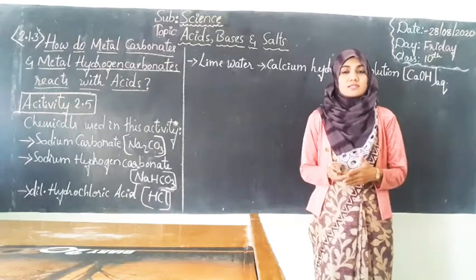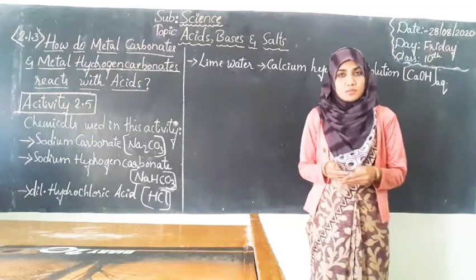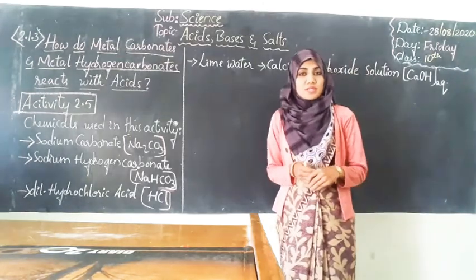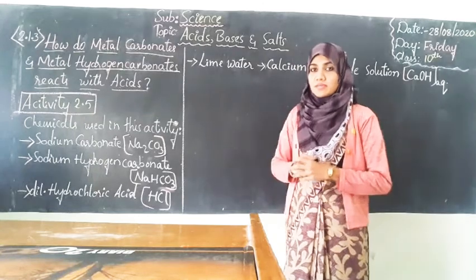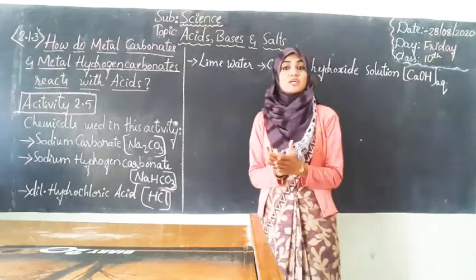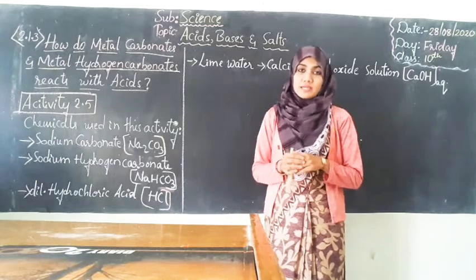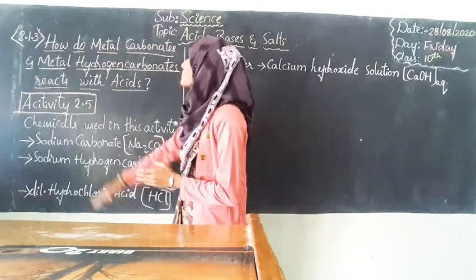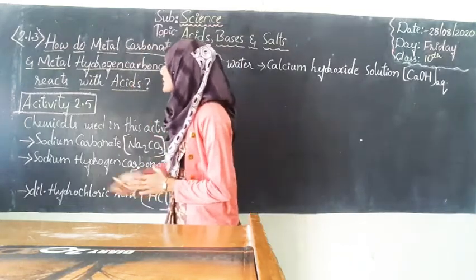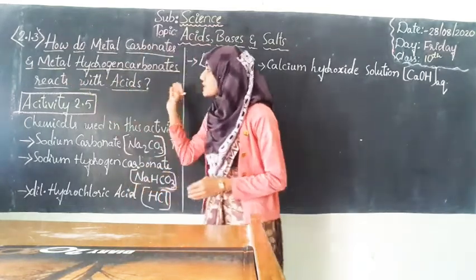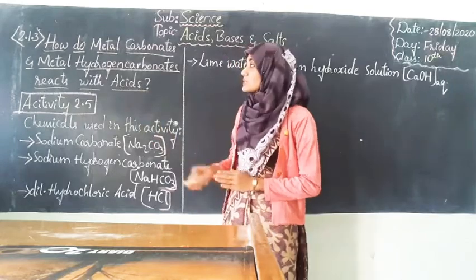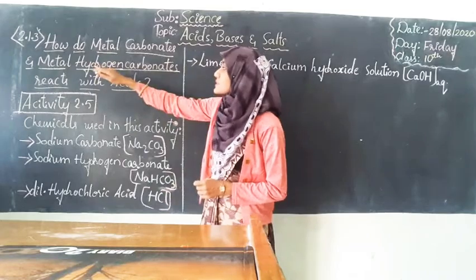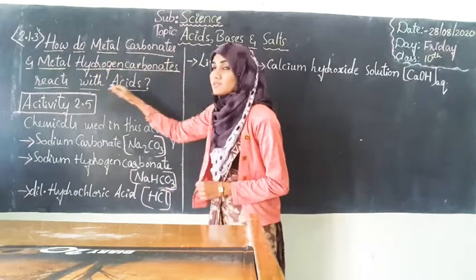Hello students. Last class we learned about the chemical properties of acids and bases. Today we shall know a few more chemical properties of acids and bases. The activity will be related to how do metals, carbonates, and metal hydrogen carbonates react with acids — that is section 2.1.3 in your textbook.